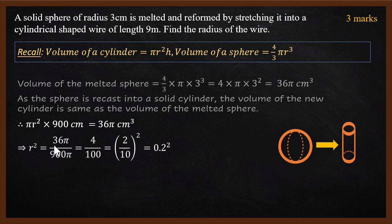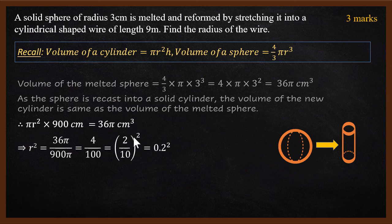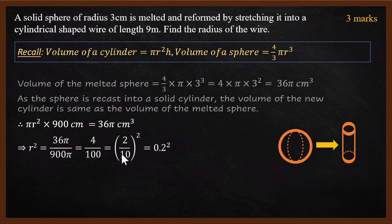9 times 4 is 36, which is what we have written as 4. Pi cancels. In the denominator, we have 100, which is equal to 2² divided by 10². 10² is 100, 2² is 4. So 2 by 10, which is 0.2. 0.2 squared. So if r² is 0.2², what is r? r is 0.2 cm.